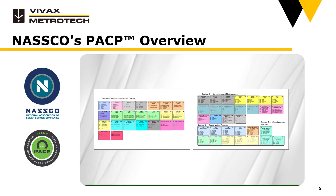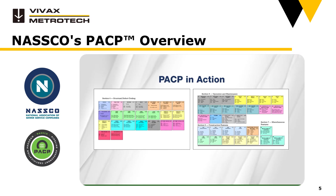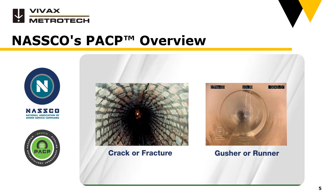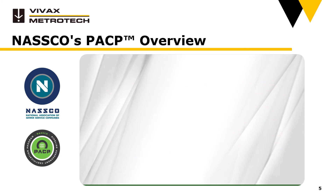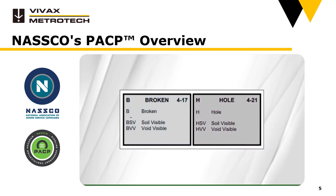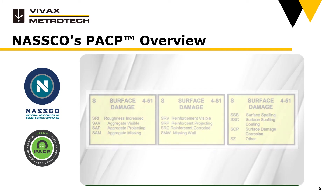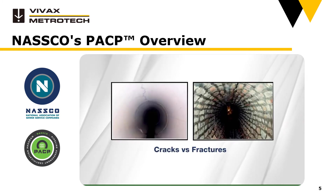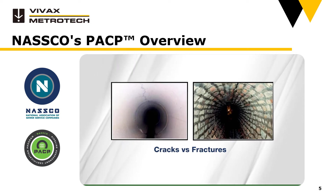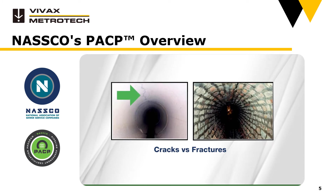Let's choose a few codes from each coding family to highlight so you can see PACP in action. Remember the quizzes from earlier in the video? From the structural defect code family, let's take a closer look at cracks versus fractures, broken versus whole, as well as surface damage. The distinction between cracks and fractures is very important when coding. Fractures are visibly open, while cracks are not.